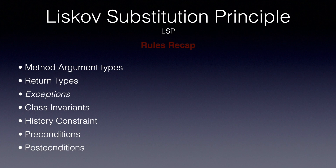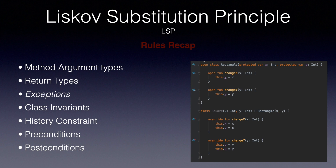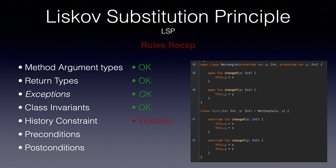Now let's go over our rectangle and square example and see where it breaks. We saw that it violates the LSP, but we did not exactly know why — which rule was broken. Method argument types: no problem. Return types: they seem fine. Exceptions: okay, no exceptions thrown. Class invariants: this needs discussing — rectangle does not have any apparent invariants, but square has, that x must be equal to y at all times. Let's say that I can solve that with the hack of changing y inside the changeX function. Well, this leads us to the violation of the next rule, the history constraint. Because in rectangle, when I change x, y stays the same — but here I violate that. So this is the violation. Preconditions and postconditions are okay; none of these rules break.